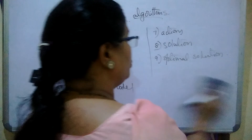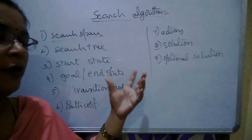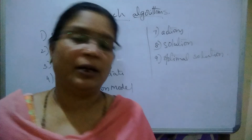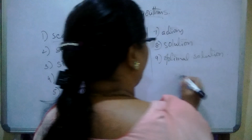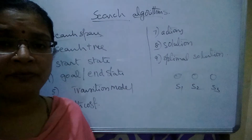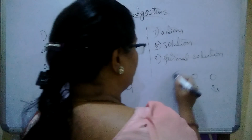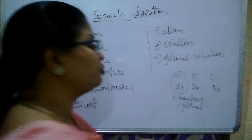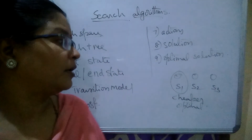The next one is solution. The goal node is called the solution. After traversing all the nodes, you reach one node and stop — that is called the solution. What is the optimal solution? If you have found three different solutions from start state to end state — S1, S2, S3 — the one that is cheaper and better among them is chosen. That is called the optimal solution — the best and cheapest solution among the existing solutions.